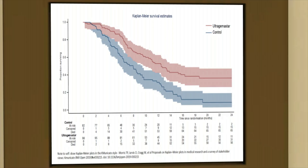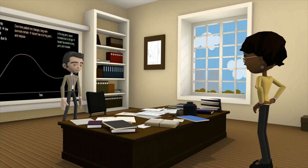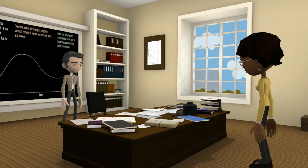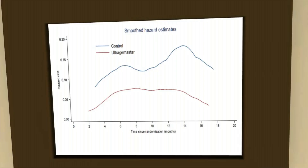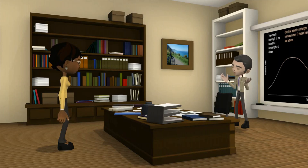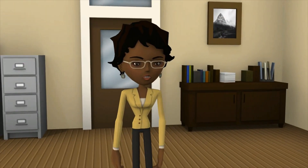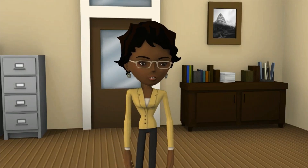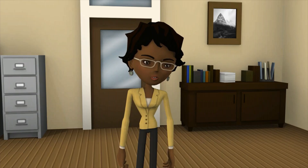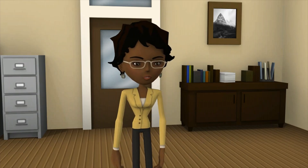What that graph is showing me is that after 19 months no one who took UltraGemma Star dies. But you told me that the hazard function was really important — what does it look like? Here it is. I've smoothed it so that you can see the trend. It goes up a bit at first, there's a bit of a wobble, but it looks like there could be a turning point. Just like that picture you showed me before. So what model do you think we should use? Well, the hazard function suggests that models that can't deal with a turning point probably aren't appropriate — so exponential, Weibull and Gompertz models probably wouldn't be the best choice.